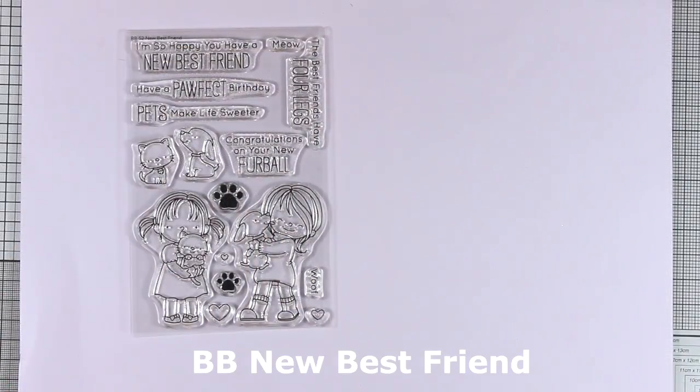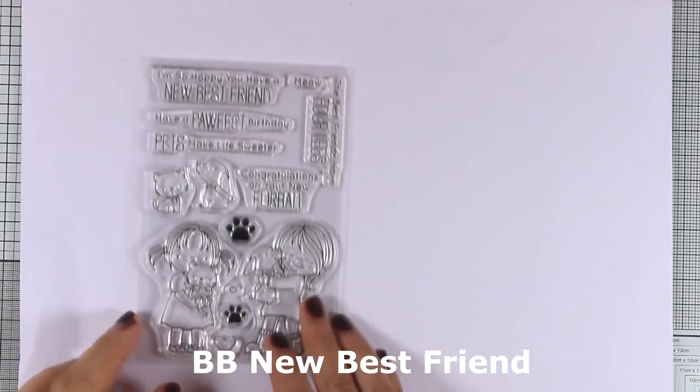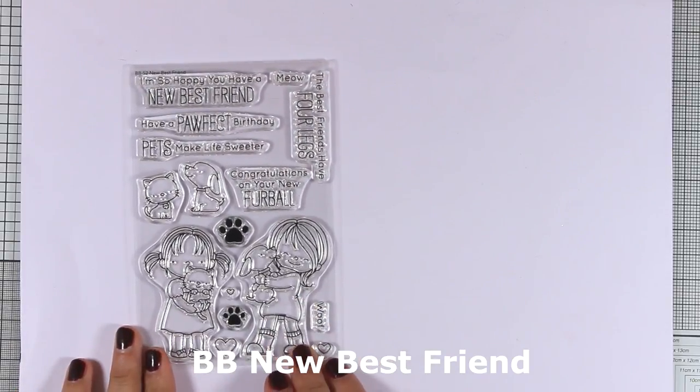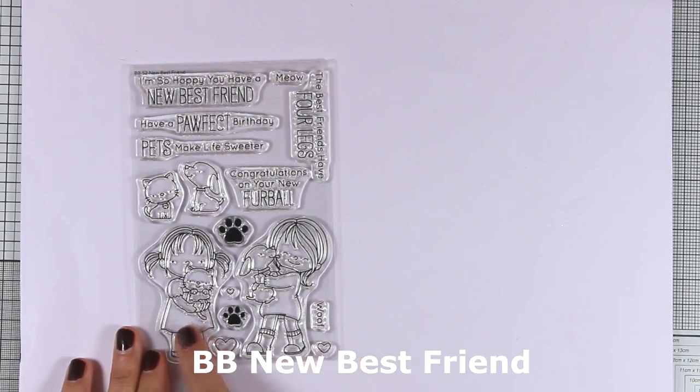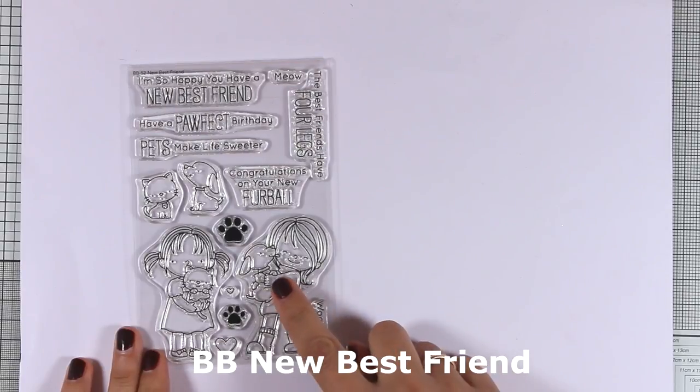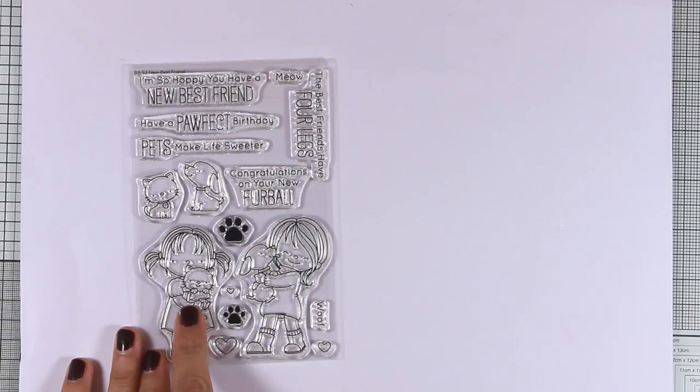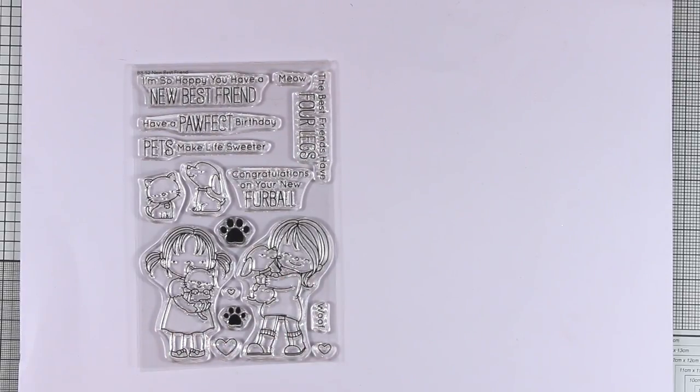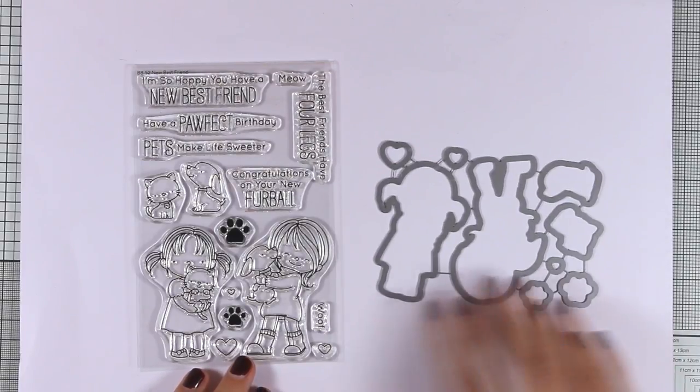Here's another lovely stamp set. I just love these designs. There are two girls—one is holding a puppy and the other is holding a little cat. There are also a cat and a dog that you can stamp on their own. A really adorable stamp set that has something for everyone, and there are also matching dies.